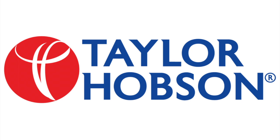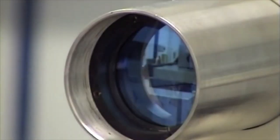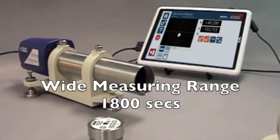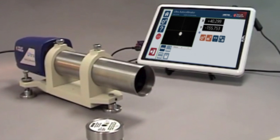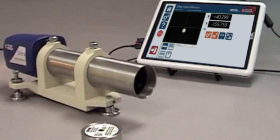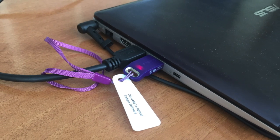New from Taylor Hobson, the Ultra Autocollimator uses the latest CCD technology with an 1800 second range on both X and Y axes and an accuracy over its entire range of 0.2 seconds. The Ultra Autocollimator is easy to use with its